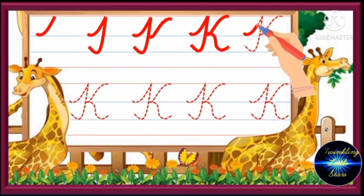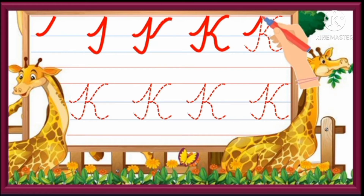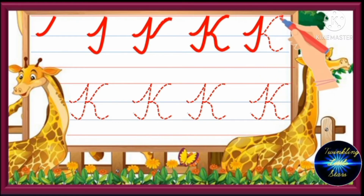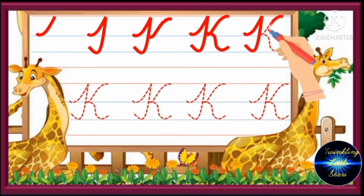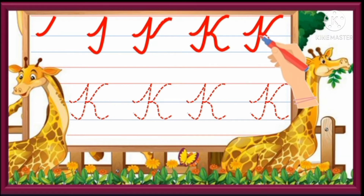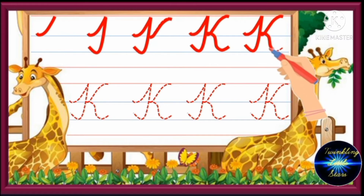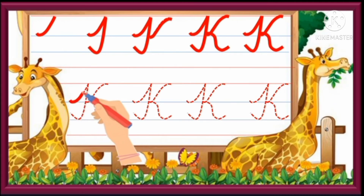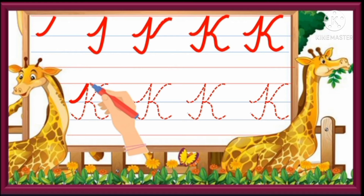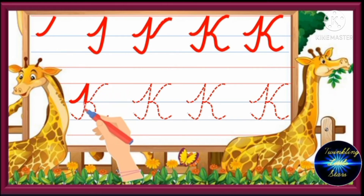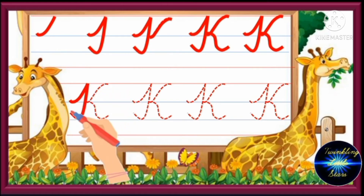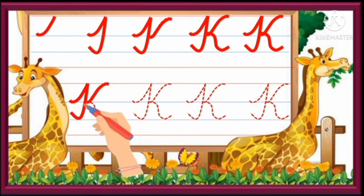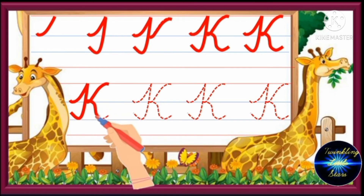Draw a half up curve. Draw a slant line then an up curve. Draw a little down curve then a slant line. Draw a half down curve then a half up curve.